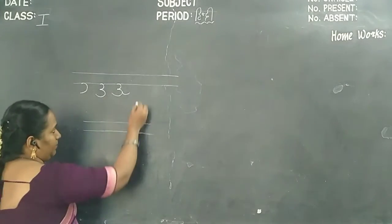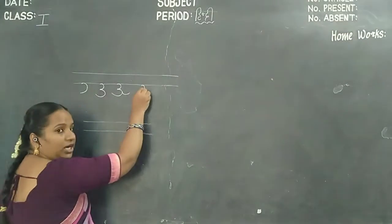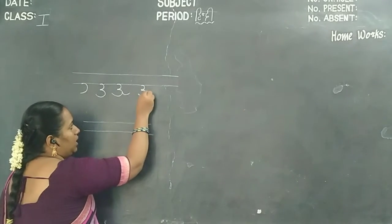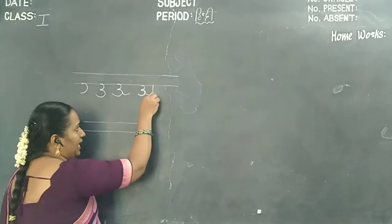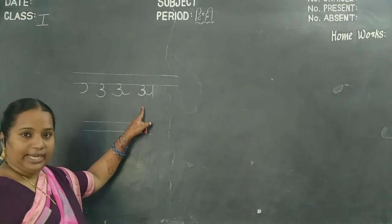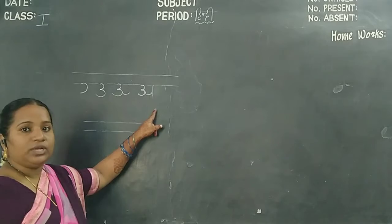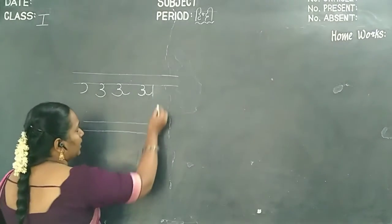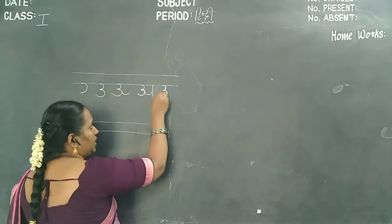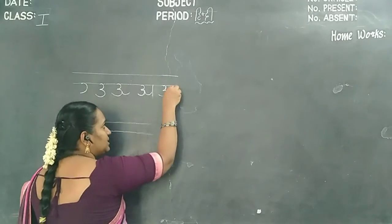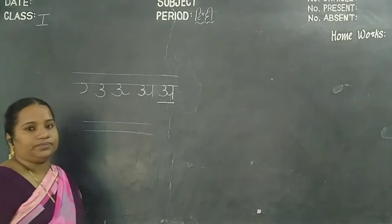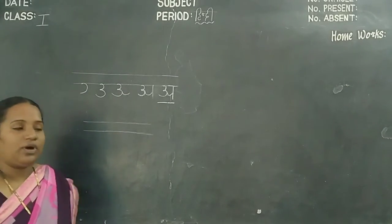Fourth step: right curve, right curve, upward curve, and standing line. And last: right curve, right curve, upward curve, standing line, sleeping line. This is the letter R.